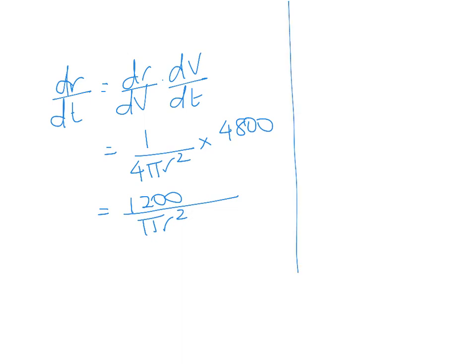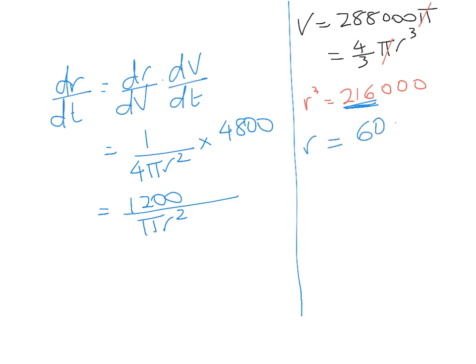The problem is we don't know r, we just know v. So we've got v equals 288,000 pi. We know that must be 4 thirds pi r cubed. Solving that equation, we divide through both sides by pi and get r cubed equals 216,000. If we're good at our cube basic facts, we'll spot that the cube root of 216 is 6, so r equals 60 centimeters.